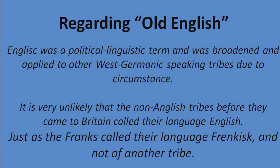King Alfred was about knowledge and learning, so he had help from all over England — a lot of them were Angles, and also people from the continent. But moving on, it's very unlikely that the non-Anglish tribes, before they came to Britain, also called their language English — just as the Franks called their language Frankish, and not after another tribe.